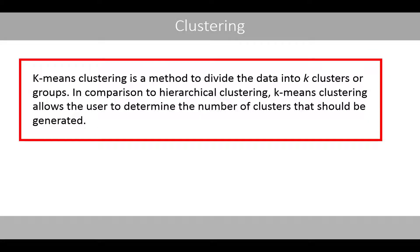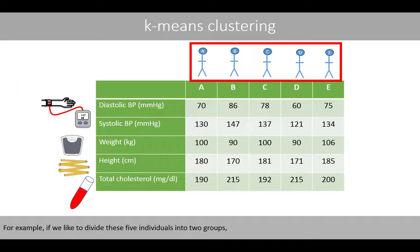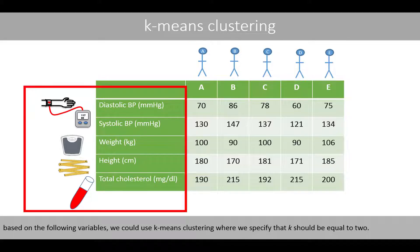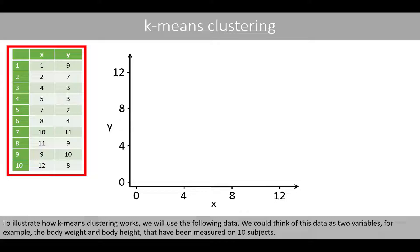K-means clustering is a method to divide the data into k clusters or groups. In comparison to hierarchical clustering, k-means clustering allows the user to determine the number of clusters that should be generated. For example, if we'd like to divide these five individuals into two groups based on the following variables, we could use k-means clustering where we specify that k should be equal to 2. To illustrate how k-means clustering works, we'll use the following data.